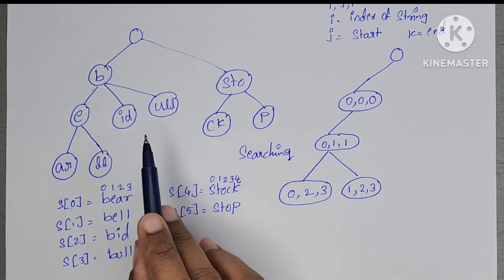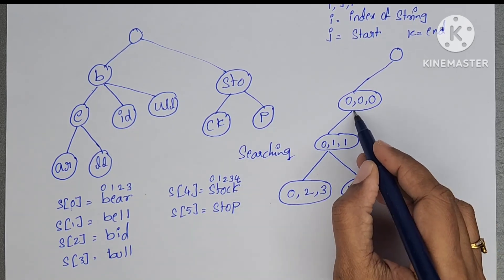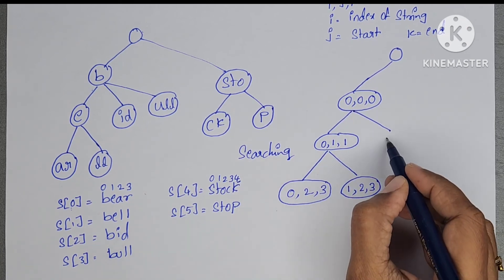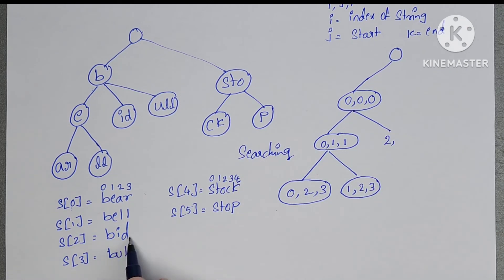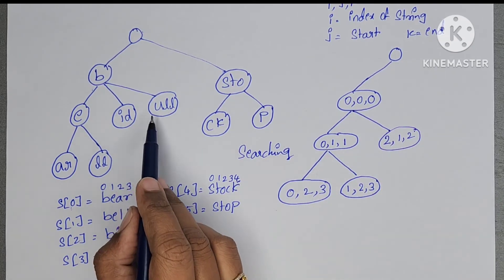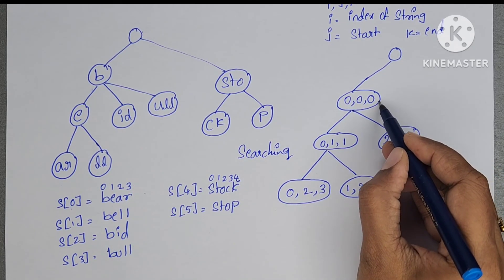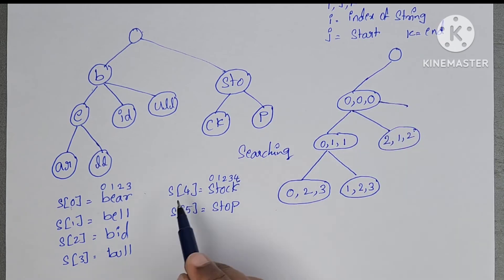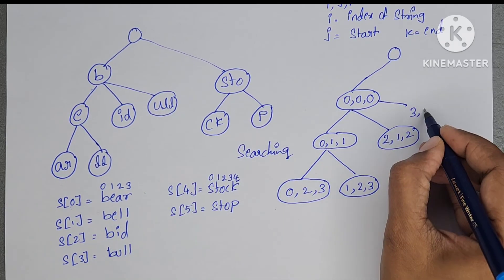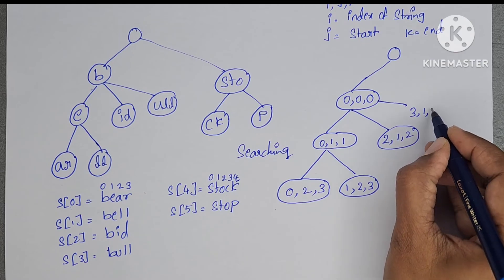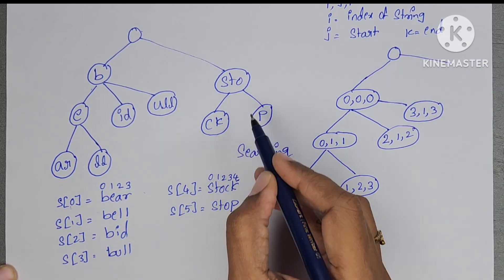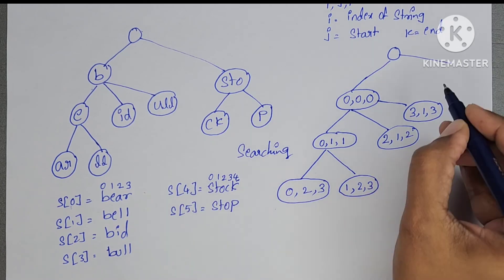For node I-D from the word 'bid': it is present in the 2nd string, starting index is 1, ending index is 2. For the combined node U-L-L: it is present in the 3rd string, starting index is 1, ending index is 3.